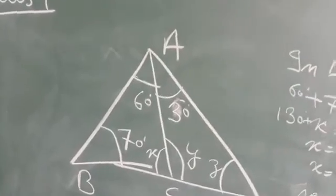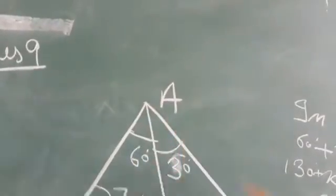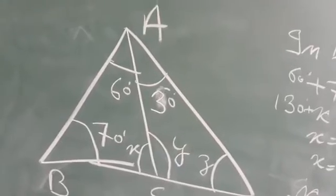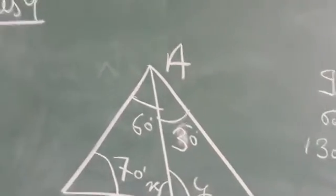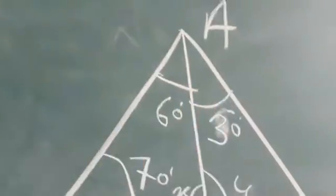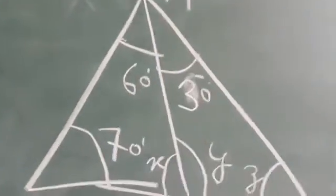Now question number 9 में 2 parts हैं जो बिल्कुल एक जैसे हैं, तो मैंने एक ही part solve किया है। ध्यान से देखो - ABCD में आपको 2 triangles दिखाई दे रहे होंगे।